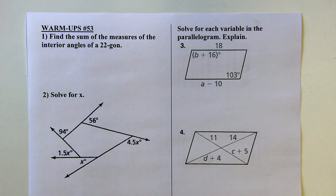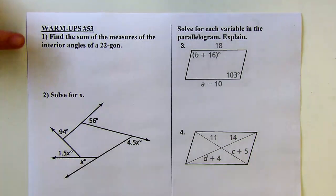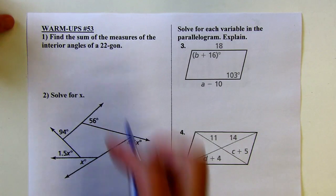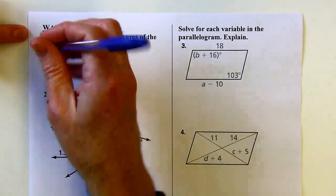Okay, welcome to warm-up number 53. Find the sum of the measures of the interior angles of a 22-sided polygon.